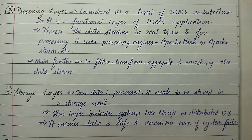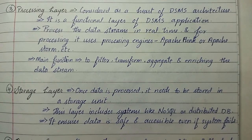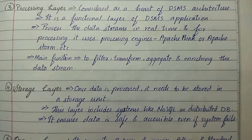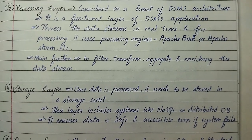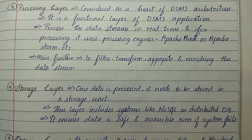Third is processing layer, considered as the heart of DSMS architecture. It is a functional layer of DSMS application. Processes the data streams in real time, and for processing it, it uses processing engines like Apache Flink or Apache Storm, etc.